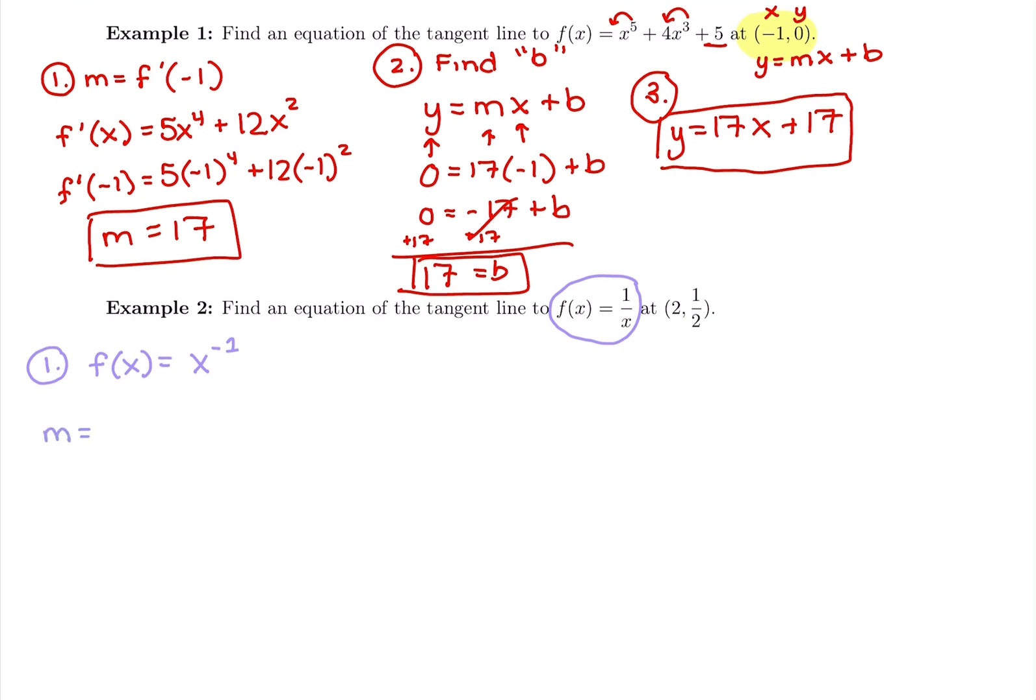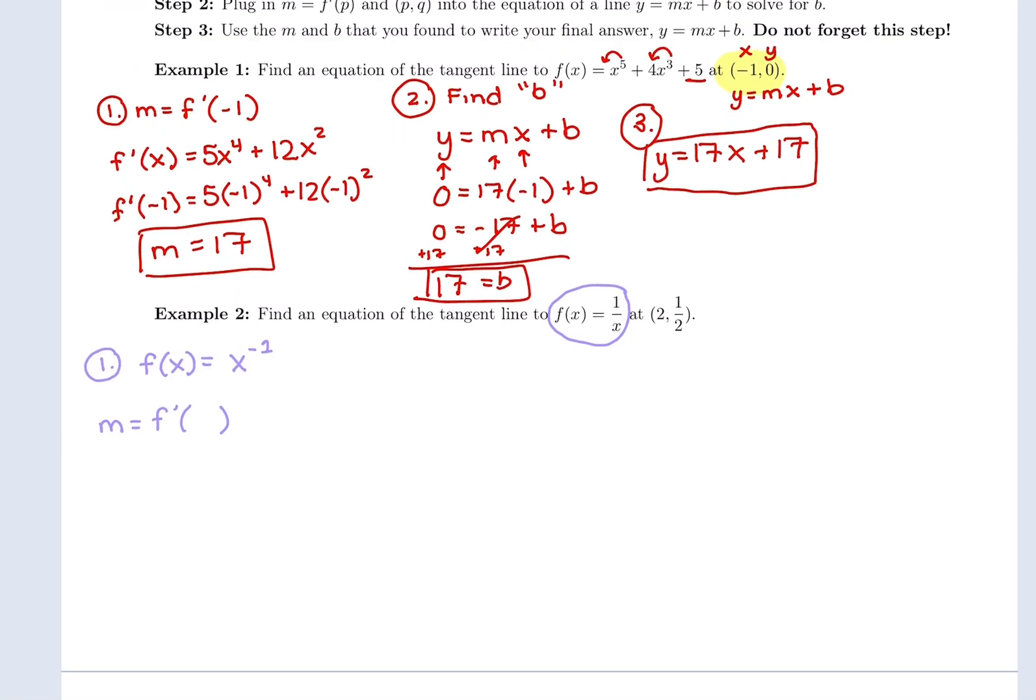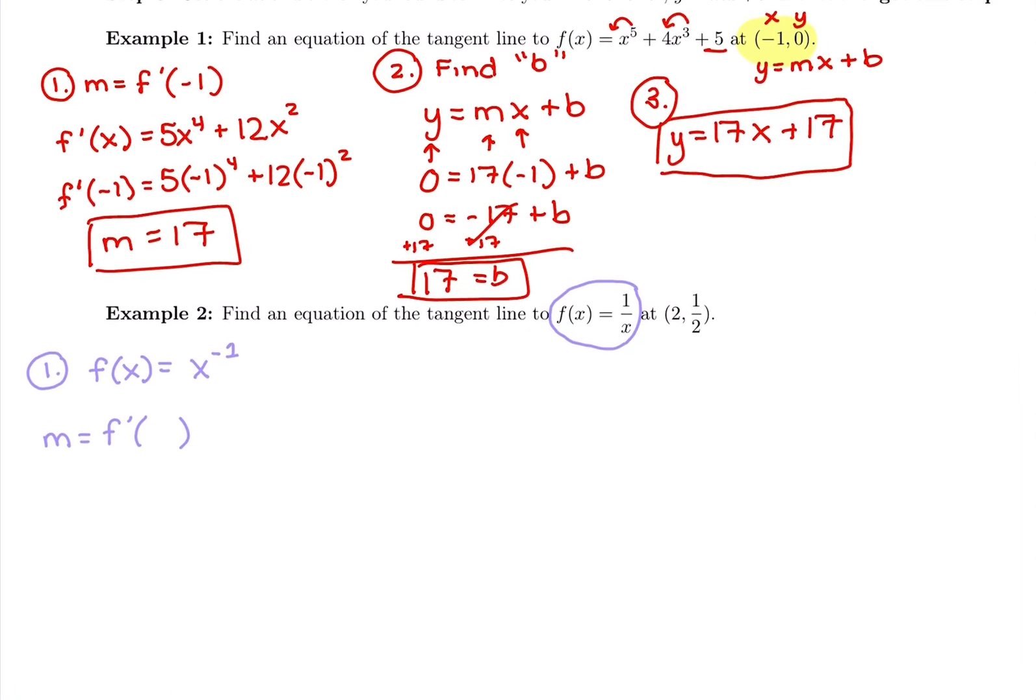So our slope of the tangent line is going to be taking the derivative of this and plugging in the x value. So looking at this point, my x value is 2, and my y value is 1 half. So we have our x comma y. So we want to do f prime of 2. Take the derivative, plug in the x value you want to be tangent to.